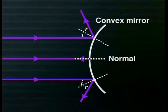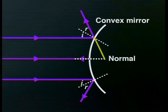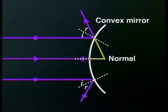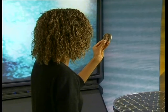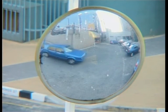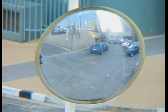Looking at the ray diagram, we can see why the image is smaller. Because of the curve of the mirror, light from the top is reflected upwards, and extending the line backwards shows where the top of the image will be. The middle ray reflects straight back and the bottom ray reflects downward — extending those rays backwards makes the image look smaller. So convex mirrors make things look smaller.